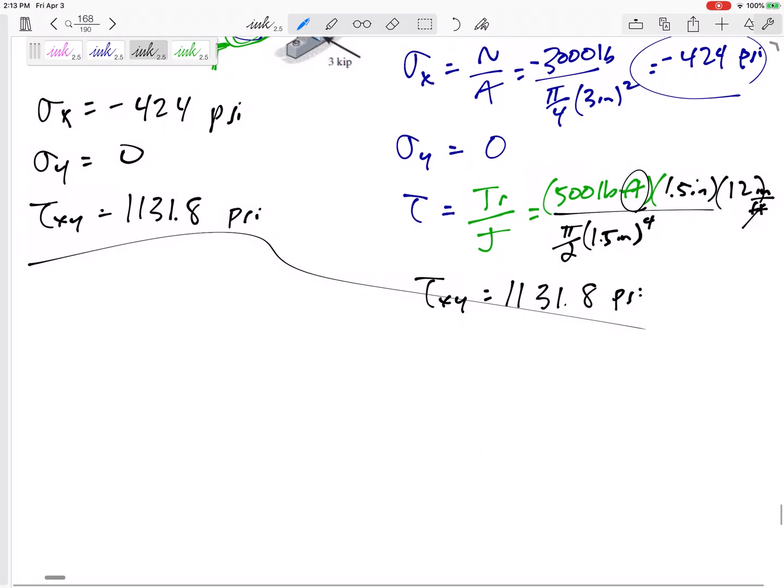So don't try to solve for too much if I don't ask for it. The principal stresses, Sigma 1 and Sigma 2, are going to be negative 424.4 plus 0 divided by 2, plus and minus the square root of...